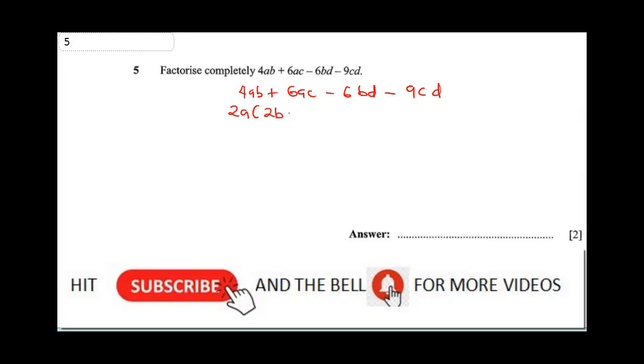Let's check. 2a × 2b will give us 4ab. 2a × 3c will give us 6ac. Now, -3d is common. So we'll have -3d(2b + 3c).